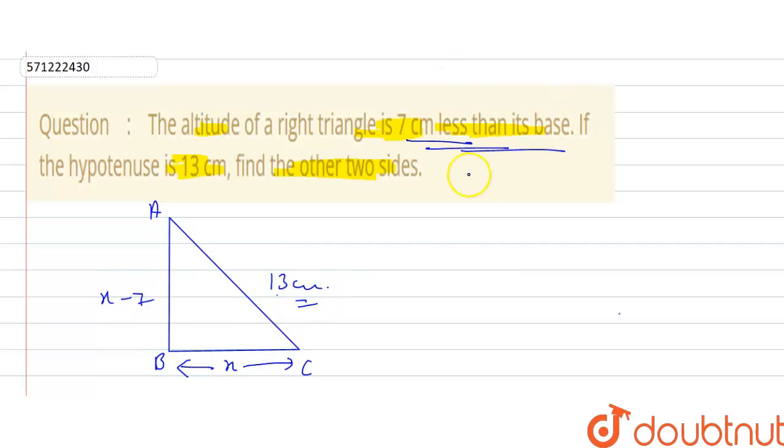Now using the Pythagoras theorem we write AC squared equals BC squared plus AB squared. AC squared becomes 13 squared is 169, that is equal to BC squared is X squared plus X minus 7 whole squared, that is equal to X squared plus X squared plus 49 minus 14X.